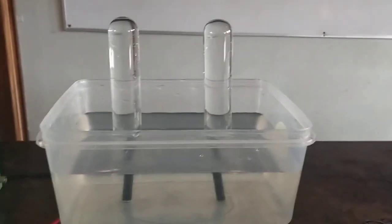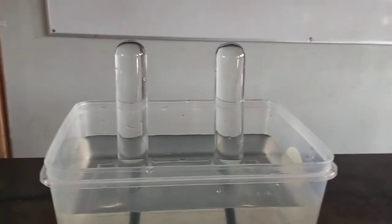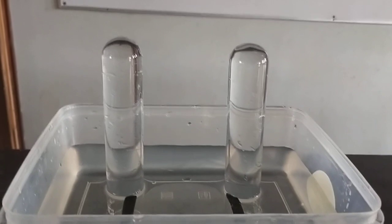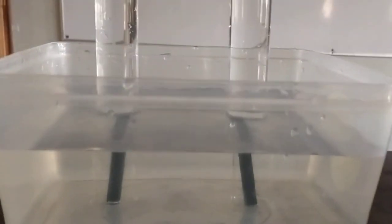The electrolysis of acidified water. This is an electrolytic cell made up of a plastic container, two boiling tubes, and two electrodes made of graphite.